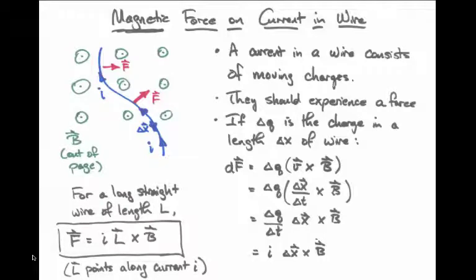For a long straight wire, you should remember the formula, that the force on that wire is i times the length cross product into the b field, where the length, in this case, is a vector that points along the direction of the motion of the current.